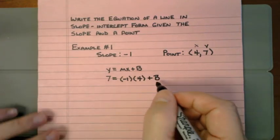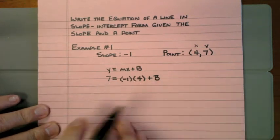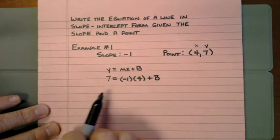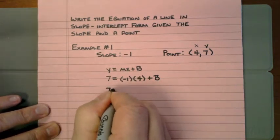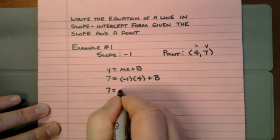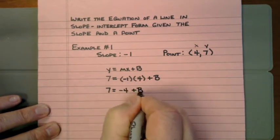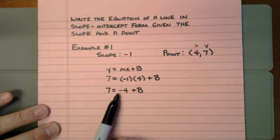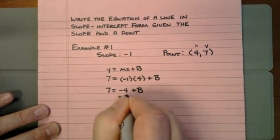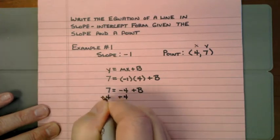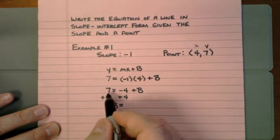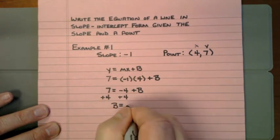Remember, b stands for the y-intercept. Once I do the math and solve this, it'll tell me what the y-intercept is. I need to multiply: 7 equals negative 1 times 4, which is negative 4, plus b. I need to solve this one-step equation. The opposite of negative 4 is positive 4, so I add 4 to both sides. b equals 7 plus 4, which is 11.